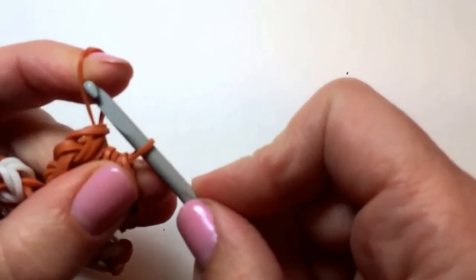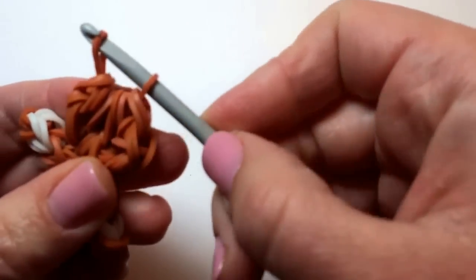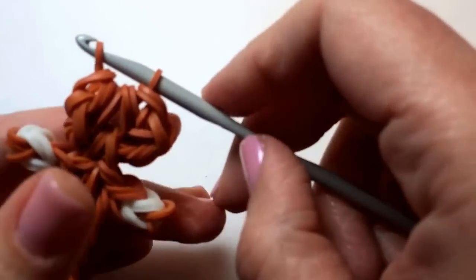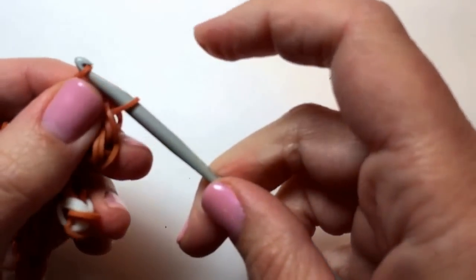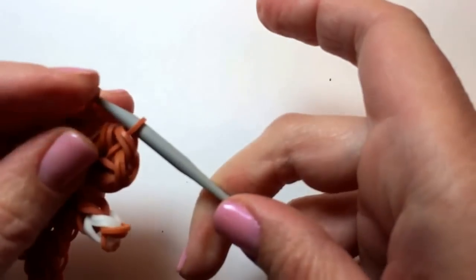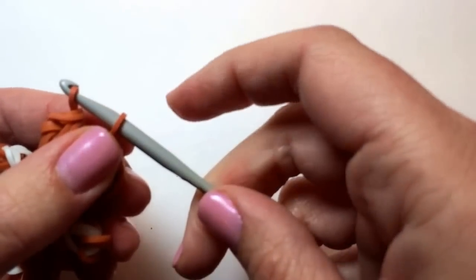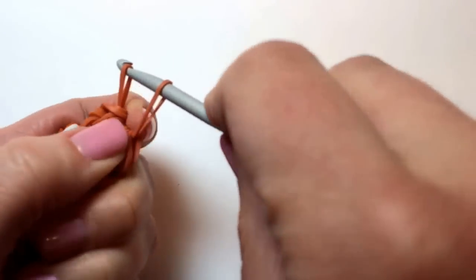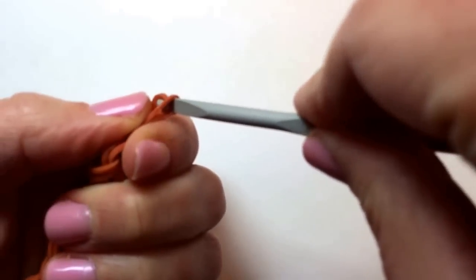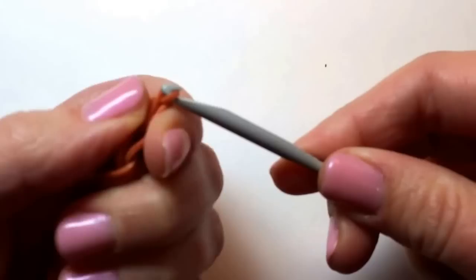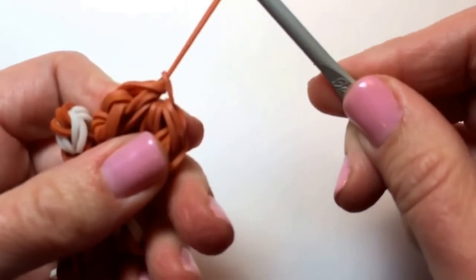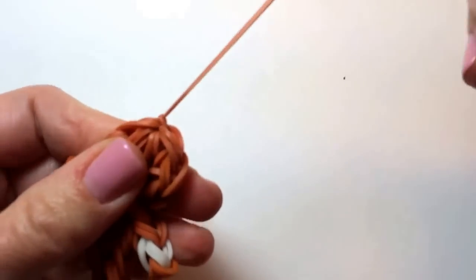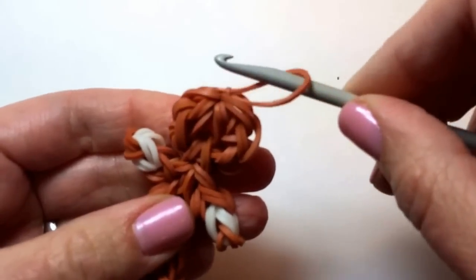So once you have your two halves of the rubber band on the hook, this side is going to go through the middle of this side. So look at it this way. It comes through. And then you tug on that one that you just pulled through the middle. And that's what makes the knot.